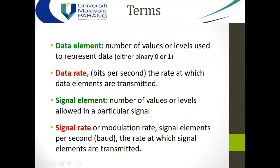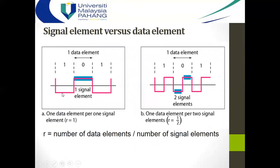Synchronization is very important for digital communication, so line coding sometimes conveys information about synchronization. It is also able to do error detection or error correction depending on the data application. Now, what are the terms involved for line coding? A data element is the binary bit, zero or one. Data rate is the bit per second — how many bits are transmitted per unit time. A signal element, or symbol, refers to the number of values or levels in a particular signal.